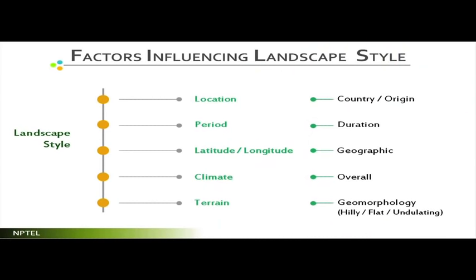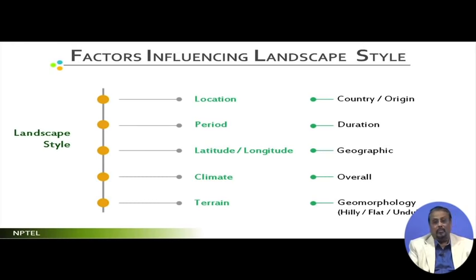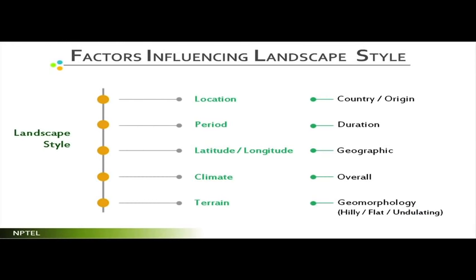Welcome to this session. So far we have discussed various characteristics of landscapes and categories of landscapes, especially historical ones. As a reference, I am rerunning this slide to get an idea of what landscape styles would be and how they would be analyzed — by location, meaning country of origin, periods, duration, latitude, longitude (geographic location), climate, and terrain or geomorphology — whether hilly, flat, or undulating.